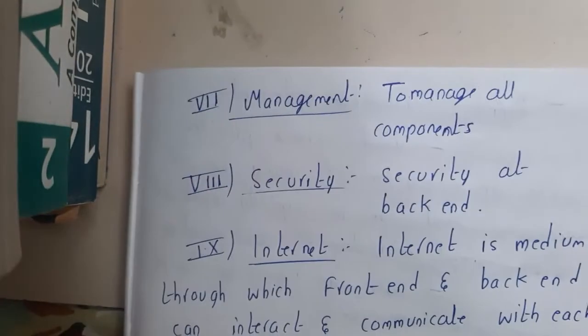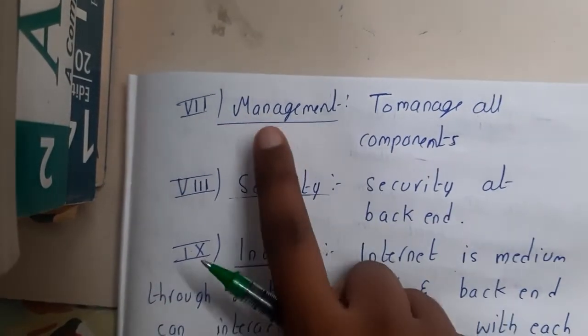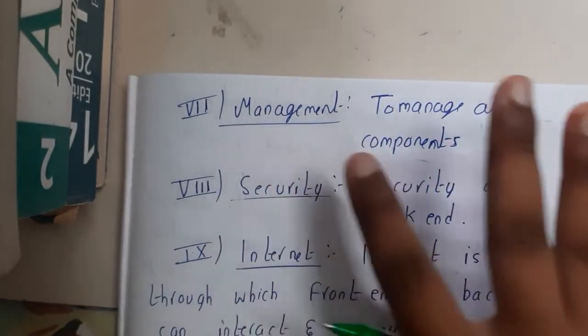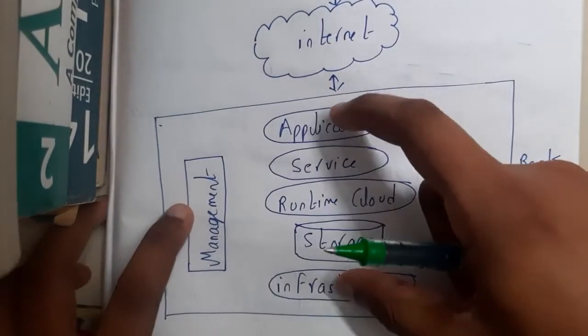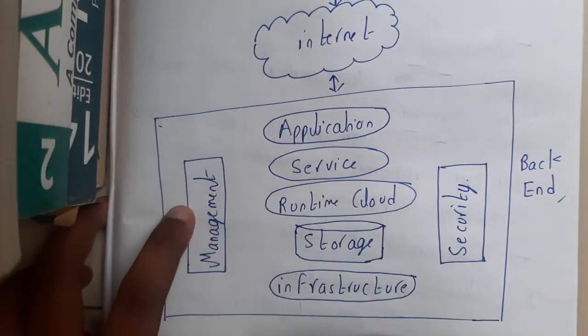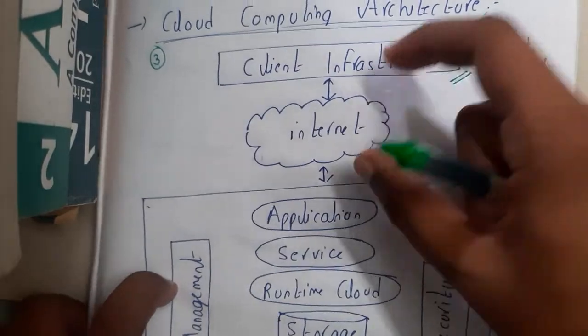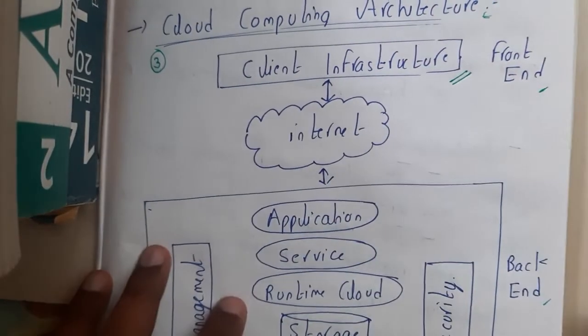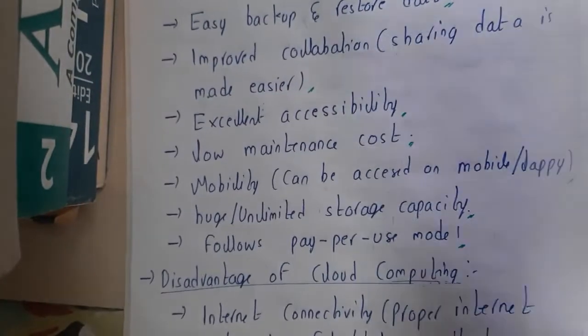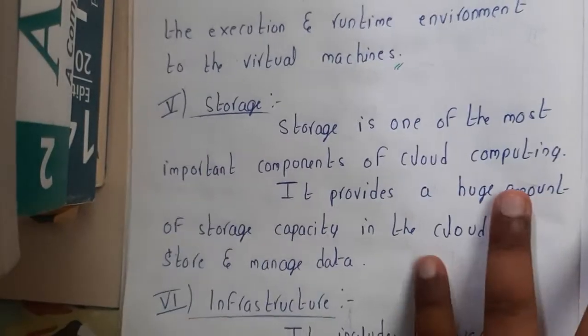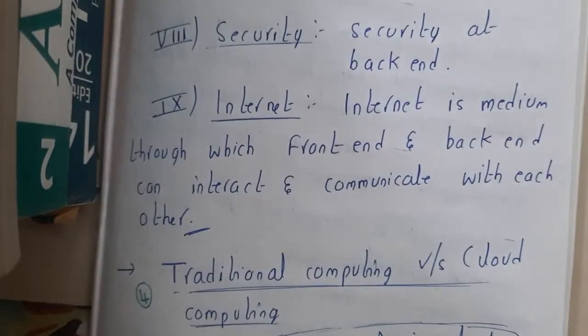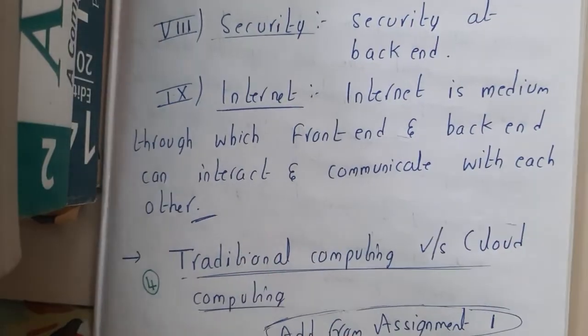We also have Management, Security, and Internet. Management is used to manage all these components — it sits on the side in the diagram. Security is used to secure all these components. Internet is the connection between your client front end and the back end — between the client and your cloud service provider.